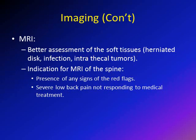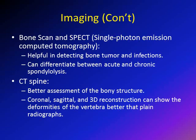MRI better demonstrates herniated discs, infection, and intrathecal tumors. Indications for MRI include any red flags identified in history or severe low back pain not responding to medical treatment. Less frequently, bone scan and SPECT — single photon emission computed tomography — are used; they help detect bone tumors and infection. For example, osteoid osteoma shows up very clearly on bone scan, and SPECT can differentiate acute from chronic spondylolysis. CT of the spine provides better assessment of bony structure than plain radiographs; coronal, sagittal, and 3D reconstructions are requested to better demonstrate vertebral deformities.